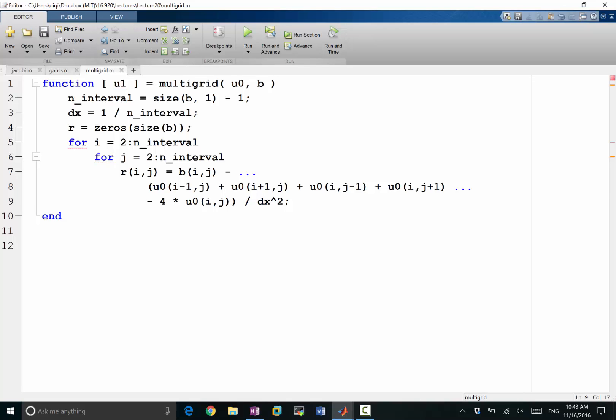We have the right-hand side minus the left-hand side of the Poisson's equation, so B minus the second order derivative of u in both x and y directions. That is our residual calculation, and once we have the residual calculation we want to interpolate this to coarse grid.